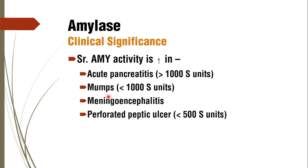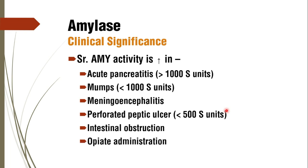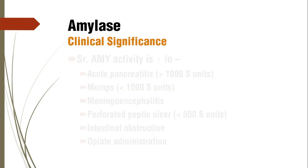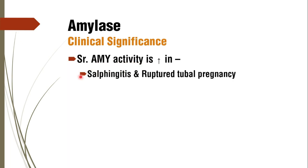Serum amylase is also increased in meningoencephalitis and perforated peptic ulcer, where the small intestine produces a small quantity of amylase, giving a rise less than 500 Somogyi units. Intestinal obstruction increases serum amylase because necrosis of small intestinal tissue releases amylase into circulation. Opioid administration also raises serum amylase, as does salivary glanditis.